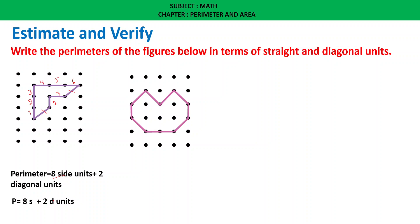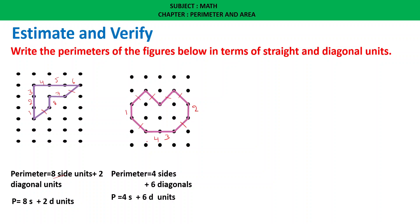Similarly, for the next figure: counting — 1, 2, 3, 4, 5, 6. Therefore, 4 straight units plus 3 diagonal units.